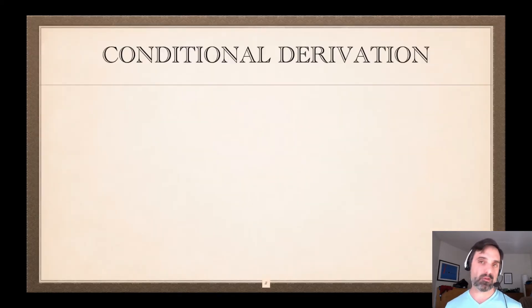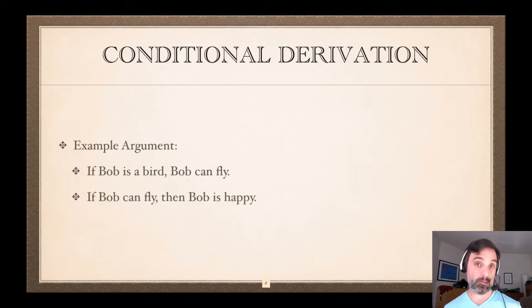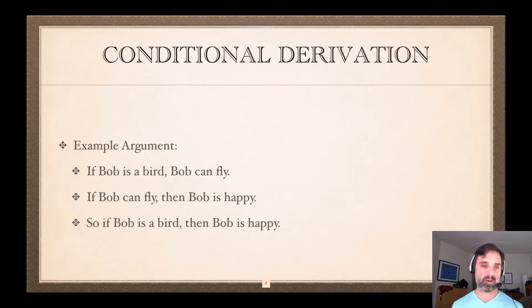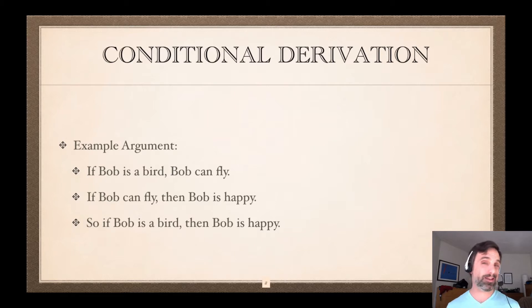Let's have an English example first of an argument and a conditional derivation of it. Here's an example argument: if Bob is a bird, Bob can fly; if Bob can fly then Bob is happy; and so if Bob is a bird then Bob is happy. We can't do a direct derivation of this because if we just write down the premises and restrict ourselves to the inference rules we have at hand, there's nothing we can do — in particular, we can't do modus ponens.